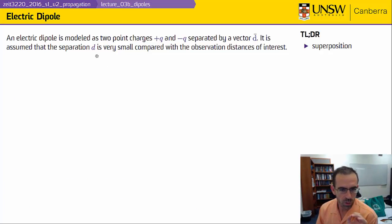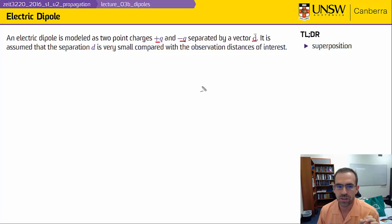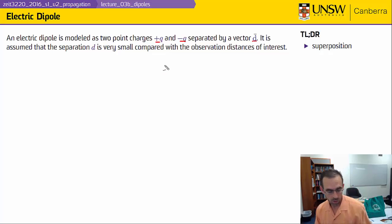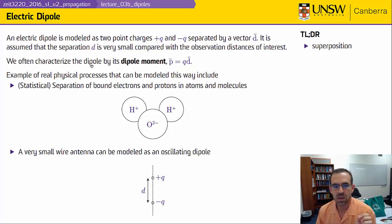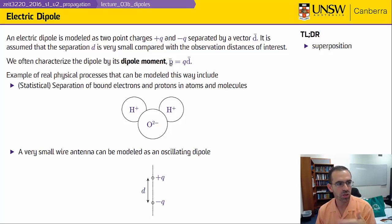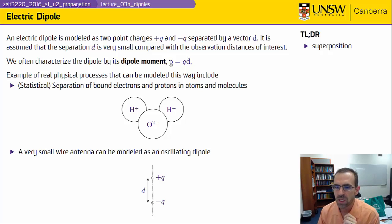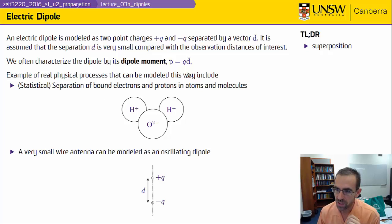An electric dipole has two point charges that are equal and opposite in magnitude, separated by a small vector d. We assume that this distance d between the two point charges is small compared with the observation distance. We often characterize an electric dipole by its dipole moment P, which we'll use in the next lecture when we talk about the interaction of electromagnetic fields with materials. The dipole moment by definition is Q times d, and by convention the dipole moment goes from the negative to the positive charge.